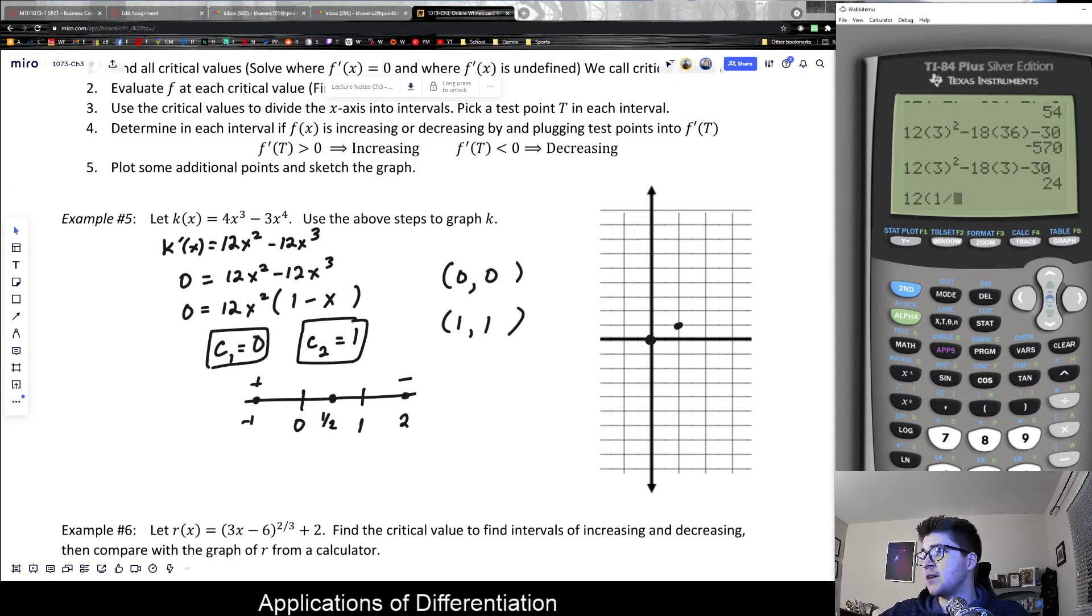Let's use a calculator to check that: 12 times (1/2)² minus 12 times (1/2)³, and that would give me 1.5. I just care whether it's positive or negative. By this analysis and the first derivative test, 0 is not a relative min or max because it does not change signs. It's increasing up until here and then again increasing up until this point. This point at 1 should be a relative maximum because it's changing from increasing to decreasing.